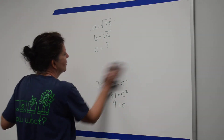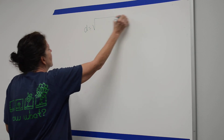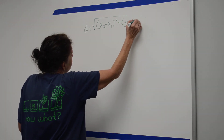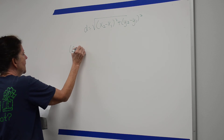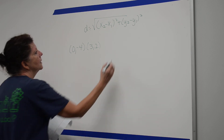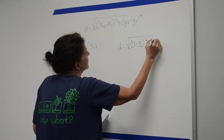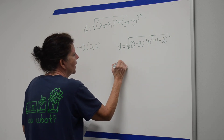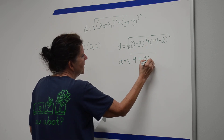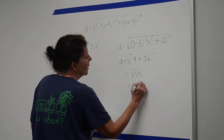Section 11.5 covered the distance formula. Given any two points, you can find the distance between them. For points (0, negative 4) and (3, 2): D equals the square root of (0 minus 3) squared plus (negative 4 minus 2) squared. That's the square root of 9 plus 36, which is the square root of 45. Since 45 is 9 times 5, the answer is 3 on the square root of 5.